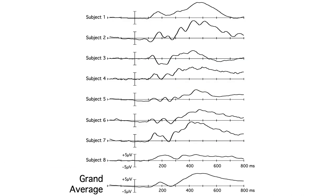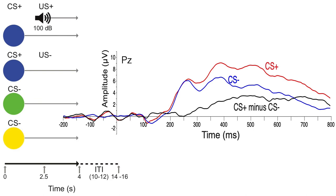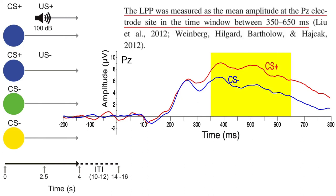We don't usually show single subject ERP waveforms in ERP papers. Instead, we take the single subject waveforms and average them together into a grand average. So these are grand average waveforms. But for the statistical analyses, Felix quantified the LPP amplitude from each individual subject's waveform by measuring the mean amplitude between 350 and 650 milliseconds at the PZ electrode site from each subject's CS plus and CS minus waveforms.